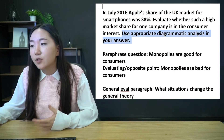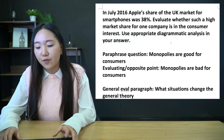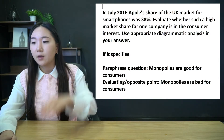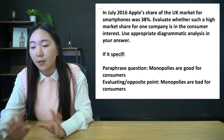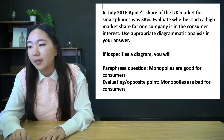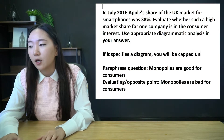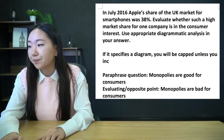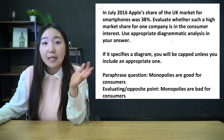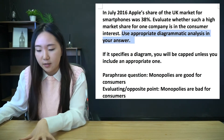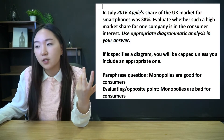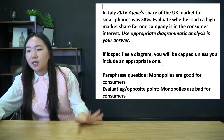The second thing is this: use appropriate diagrammatic analysis. If it specifies a diagram, that means you will be capped - you will not be able to get to the top band unless you use a diagram of some sort, and do it well. If it specifies a diagram, you will be capped unless you include an appropriate one. Bear in mind these are the differences between this question and the previous one, which did not specify a company nor a diagram.